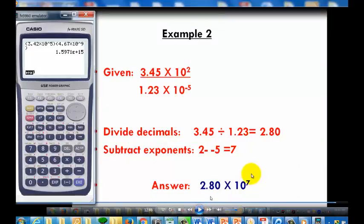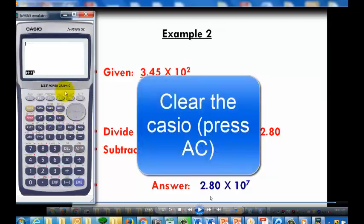Now for division, it will be the same procedure. So make sure that your Casio is in scientific mode. And make sure that when you type this 2 scientific notation into our Casio, it should be inside the parenthesis. So I'm going to just reset my Casio.